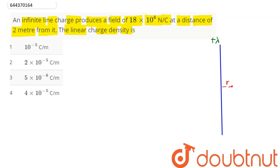We have a point which is at distance 2 meters from it. The electric field is given as 18 into 10 power 4 newton per coulomb.